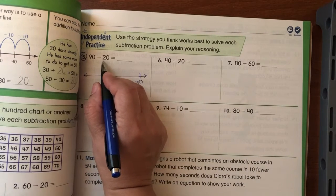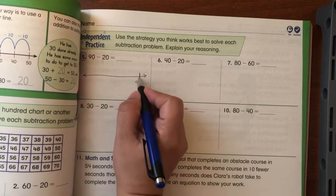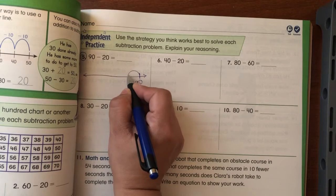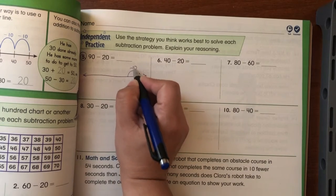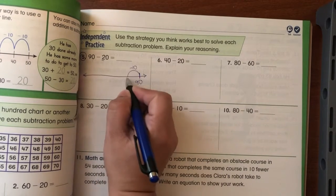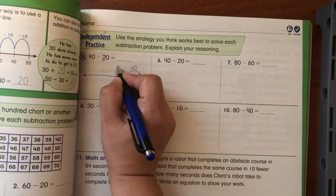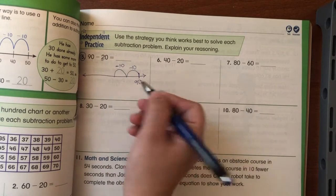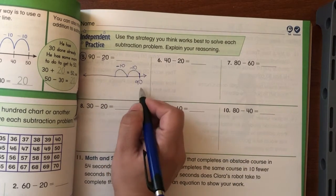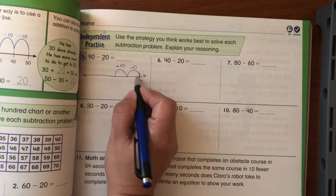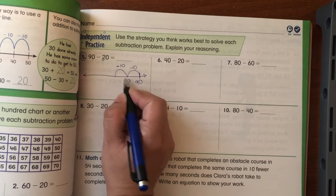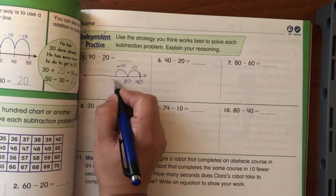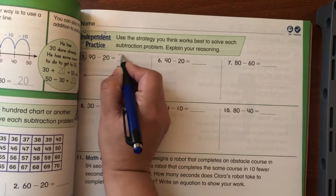So I now need to go 20 back. I'm going to count by tens, so this is one 10, and it's telling me to go two tens, another 10. So now I just need to fill in the blanks. So it'll be 90 minus 10 is 80, 80 minus 10 is 70. So that will give me my answer.